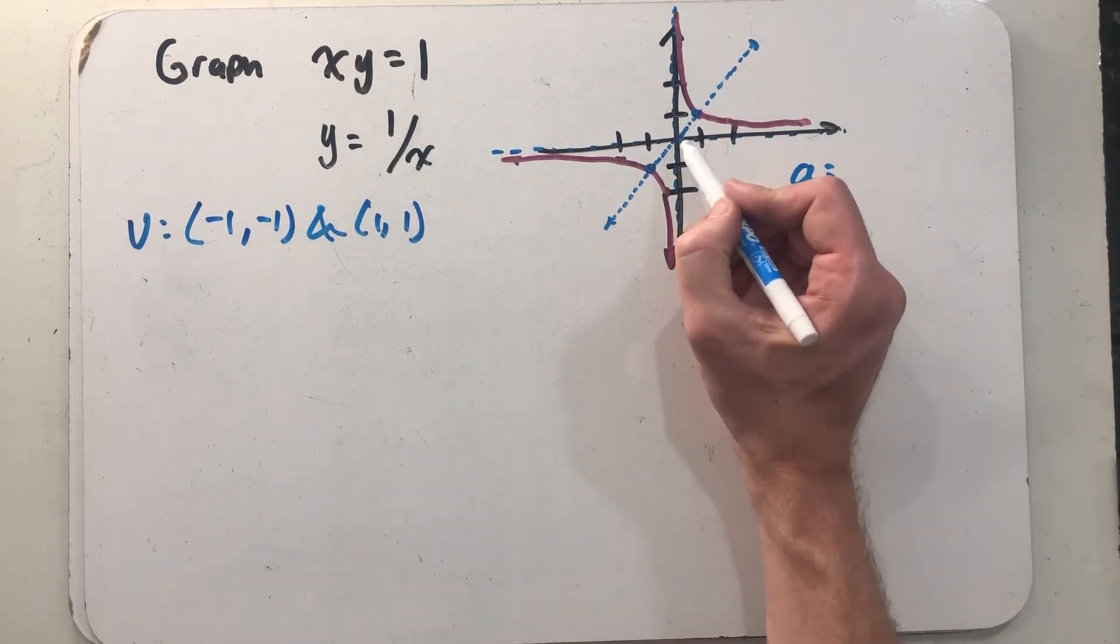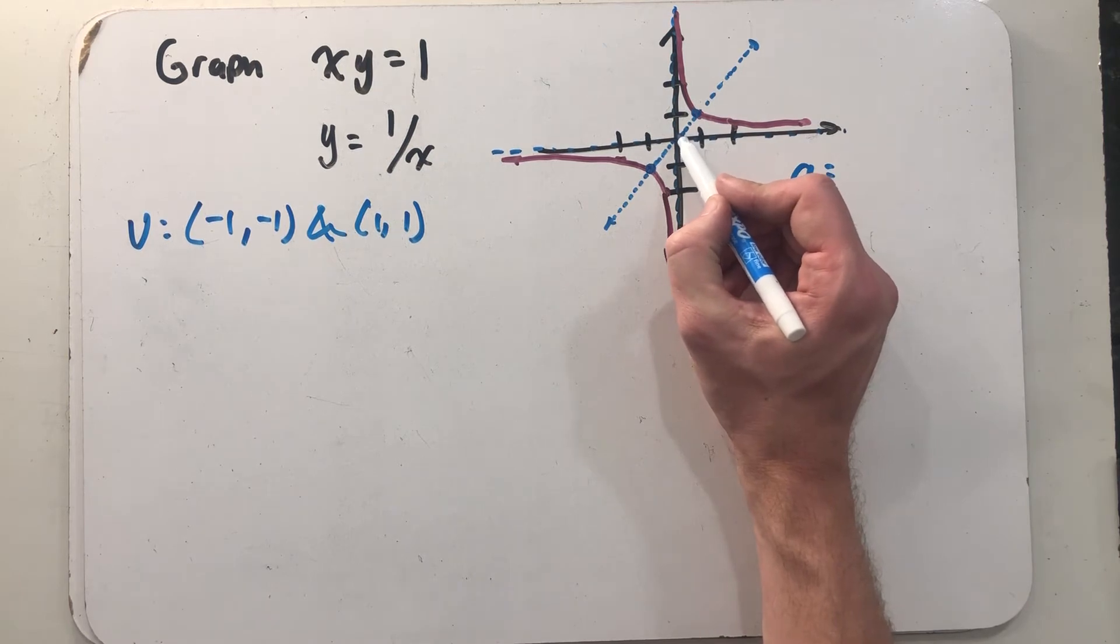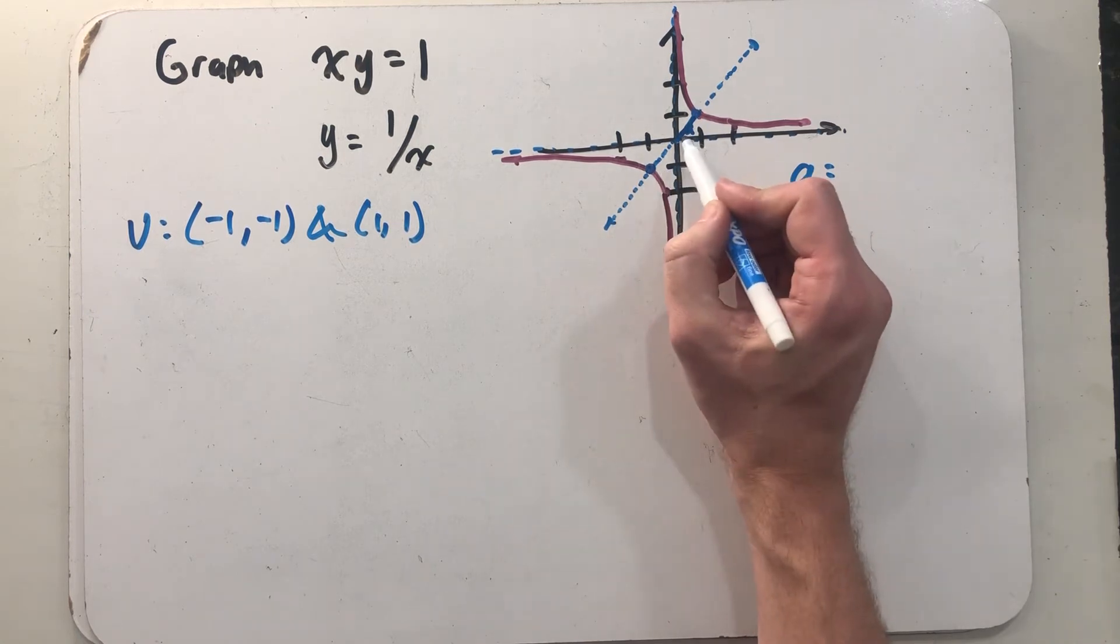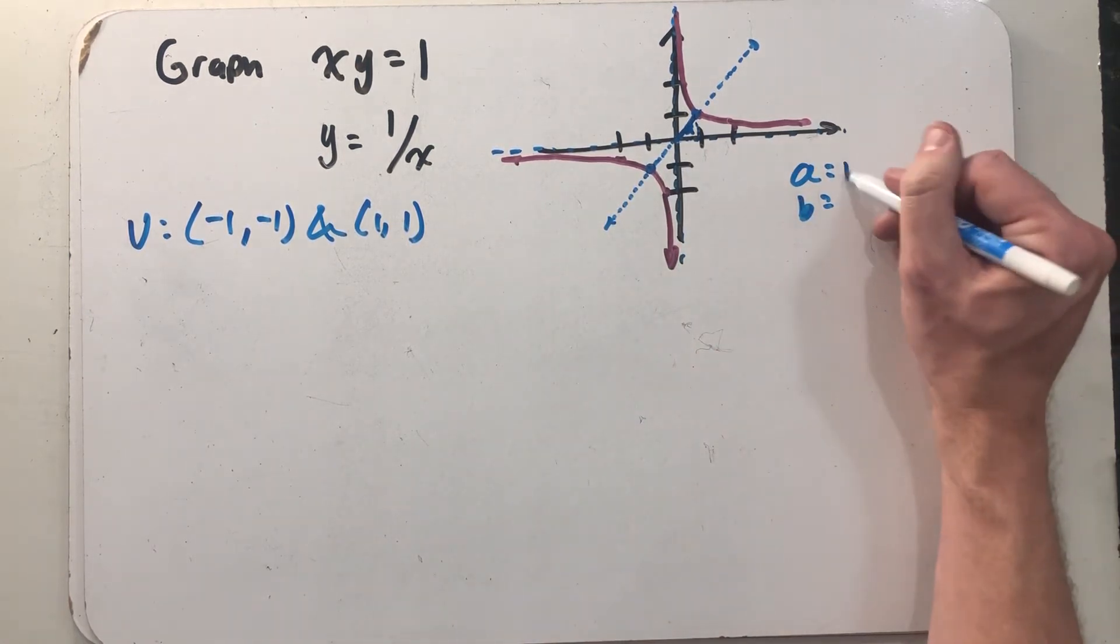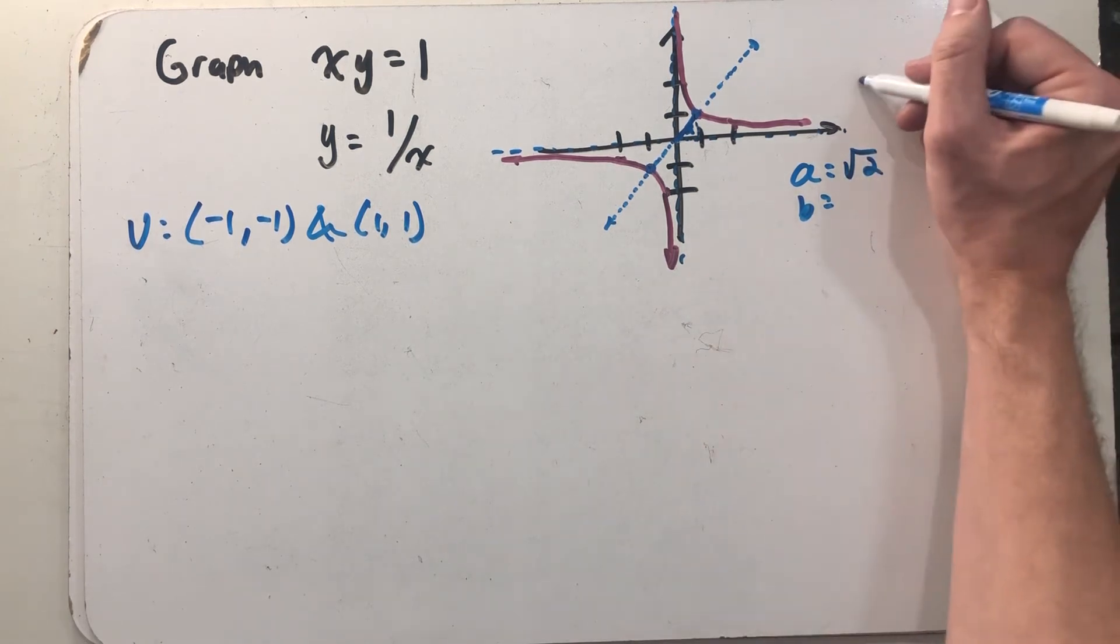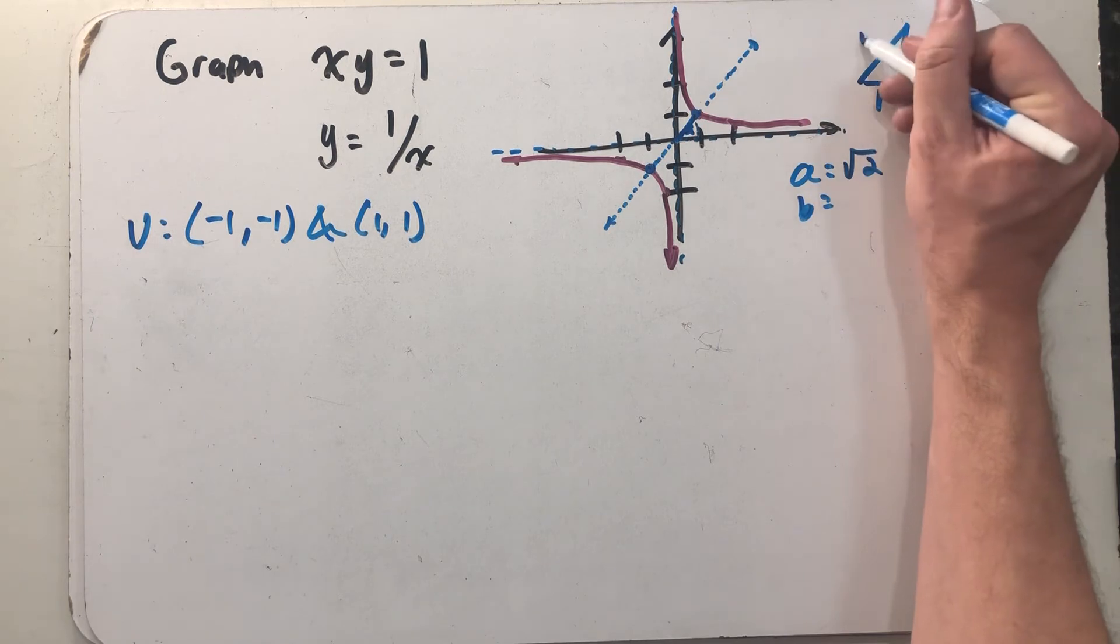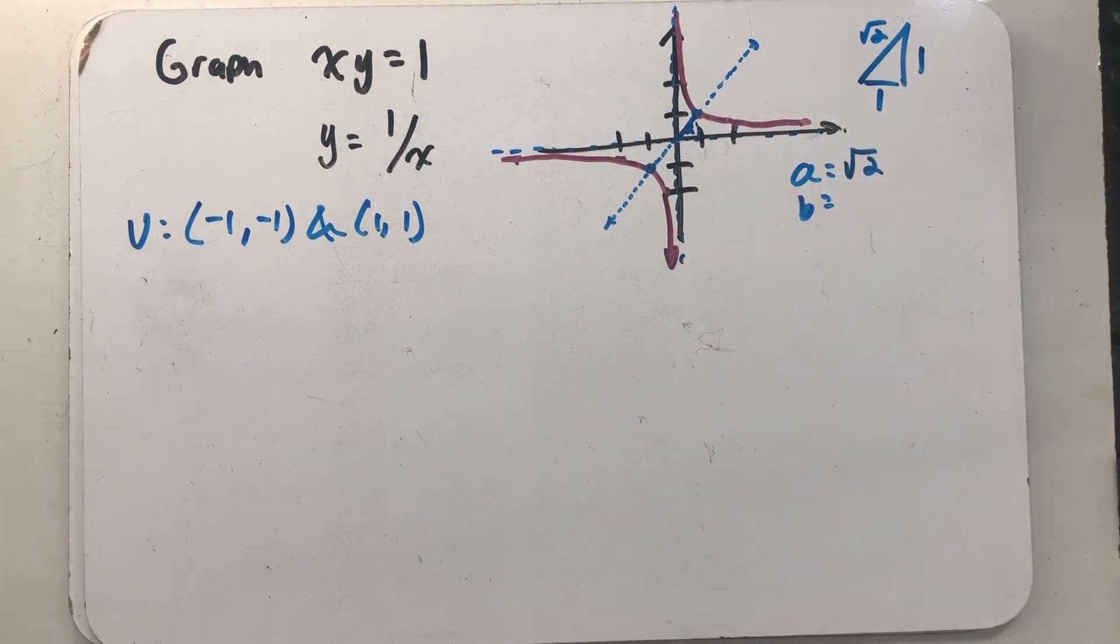The center is at the origin, and our distance a is the distance from the center to one of my vertices. So that's the value of a right there. It's over one and up one to get there, which tells me a is the square root of two. That little blue triangle I was thinking about is a one by one, so the Pythagorean theorem would tell me that a has to be root two.